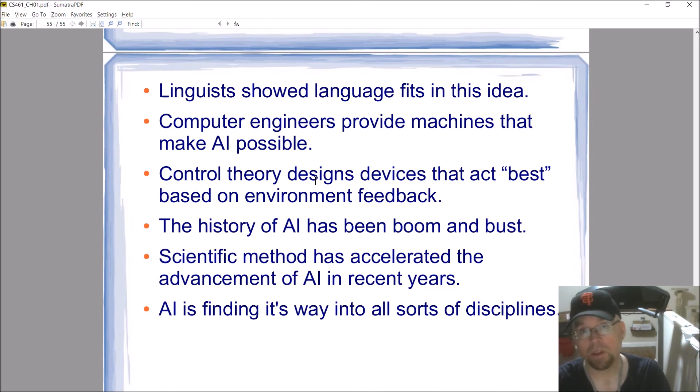Okay. Scientific method has really, really, really helped with the systematic study and development of AI technologies, right? Because of that whole publishing your work, having it be reviewed, your peers being able to test or reproduce your work and all that sort of thing we talked about in the previous video.